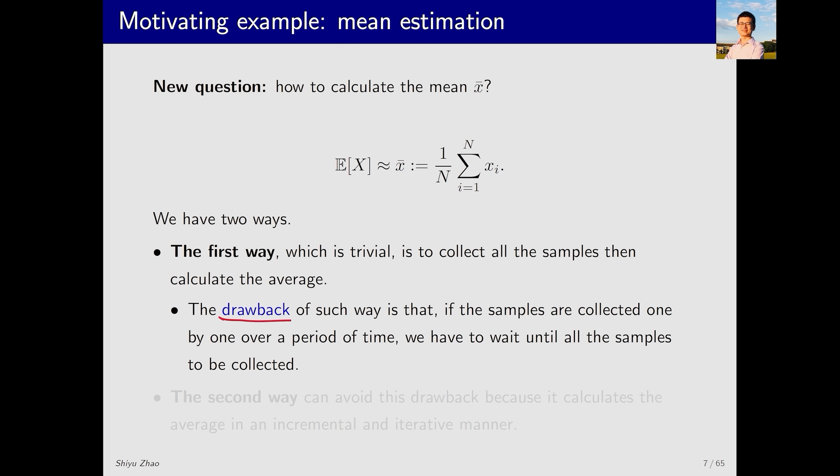The drawback of such a way is that if the samples are collected one by one over a period of time, we have to wait until all the samples are collected. Another way can avoid this drawback. It is in an incremental and iterative manner. The basic idea is to calculate the mean as the samples come in. This way is more efficient.